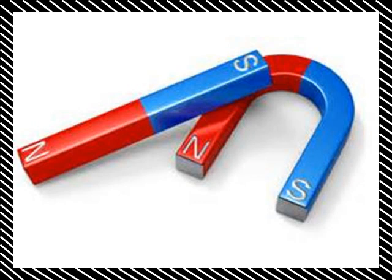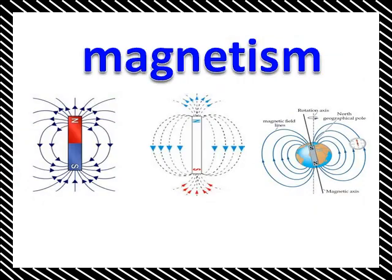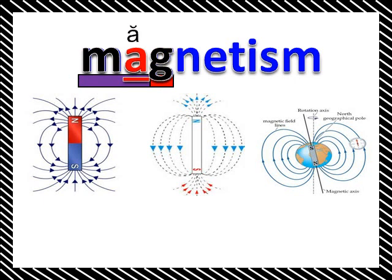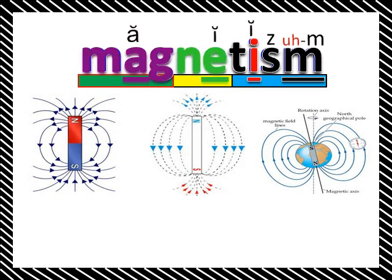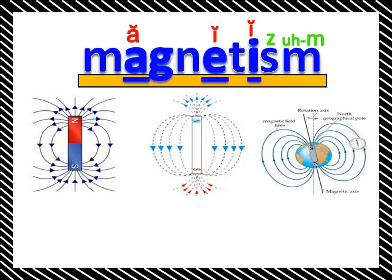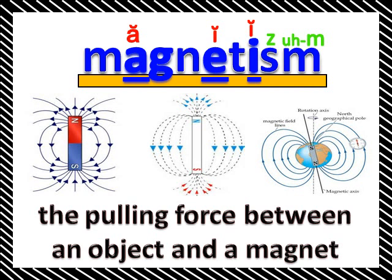Magnetism. M-A-G-N-E-T-I-S-M. Magnetism is the pulling force between an object and a magnet.